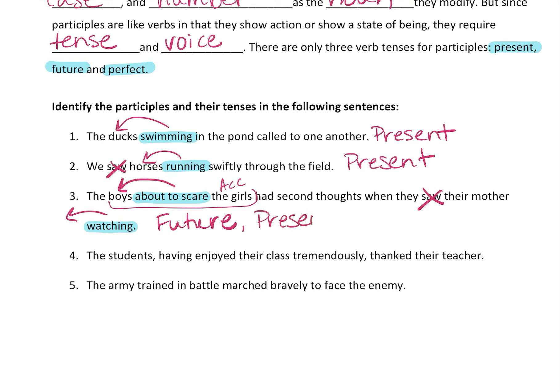'The students having enjoyed their class tremendously thank their teacher.' The participial phrase is 'having enjoyed' — which students? What kind of students? The ones who were having enjoyment. It modifies 'students.' What tense is 'having enjoyed'? That is past tense — it was done already; you can tell because of the word 'having.'